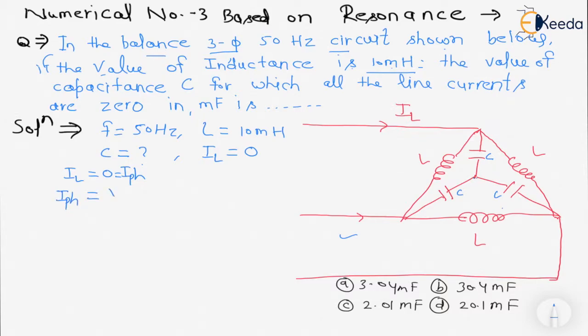I_ph will be equal to zero when Z_ph will be equal to infinity, means I_L will be equal to zero when Z_ph should be equal to infinity. Coming to the circuit...